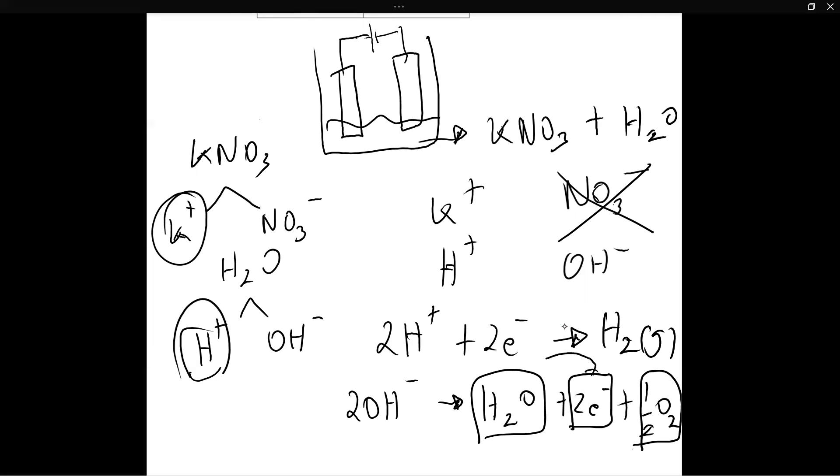Then these two electrons over here are used by 2H plus from this. The 2H plus take up or consume the two electrons produced by 2OH minus and they form H2 gas. So this happens at the anode. And this happens at the cathode.